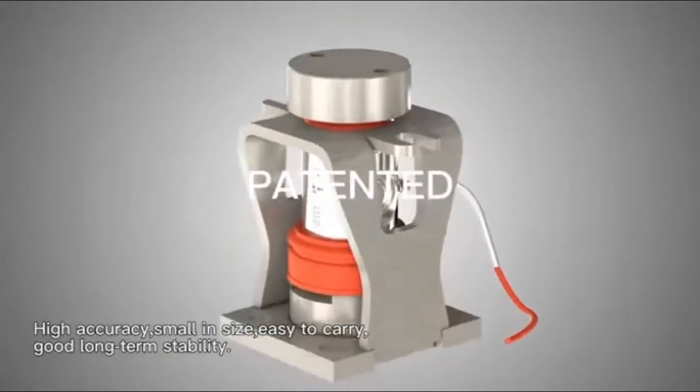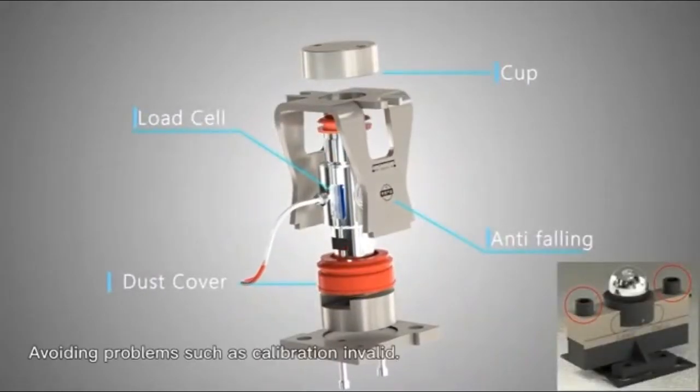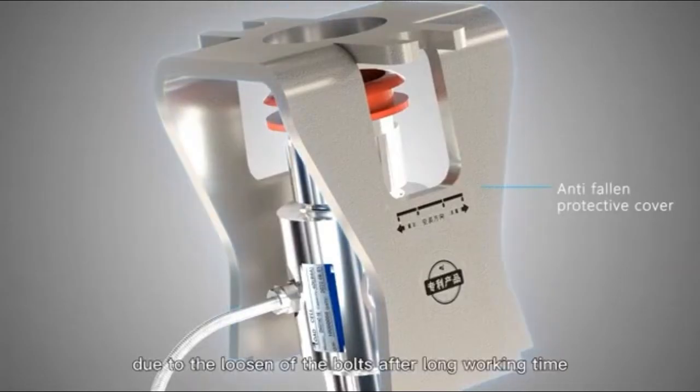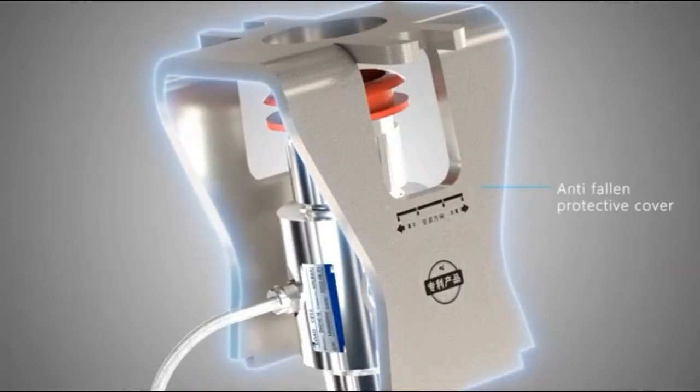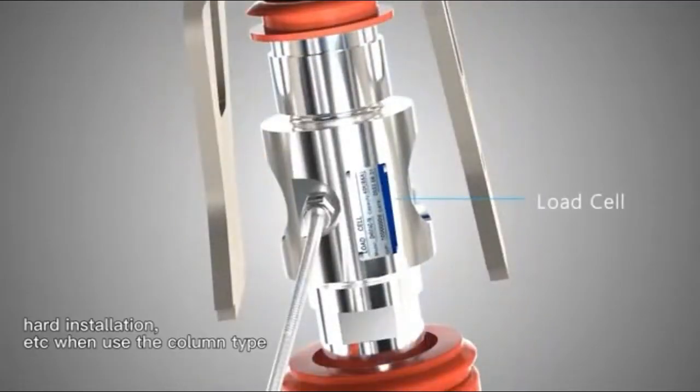The small size makes it easy to carry with good long-term stability, avoiding problems such as calibration becoming invalid due to the loosening of bolts after long working time. It solves the problems of falling down, swiveling, and hard installation that we see with column type load cells.